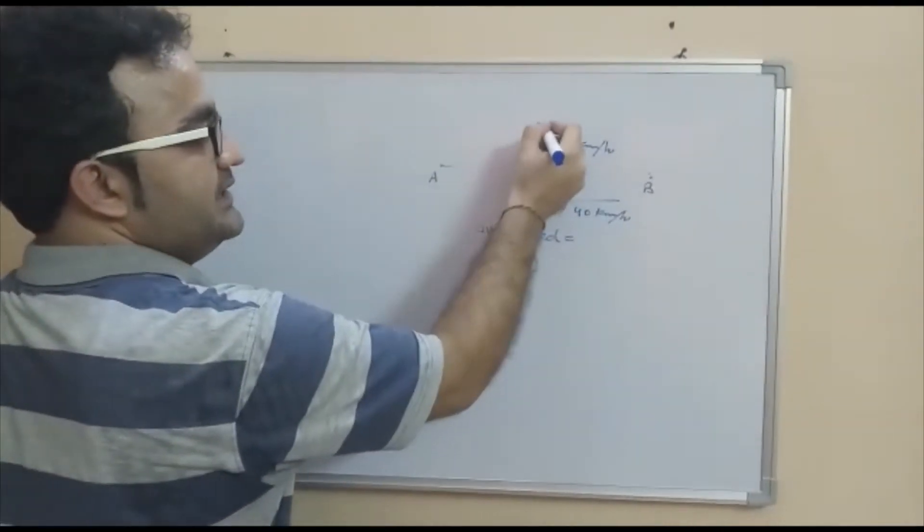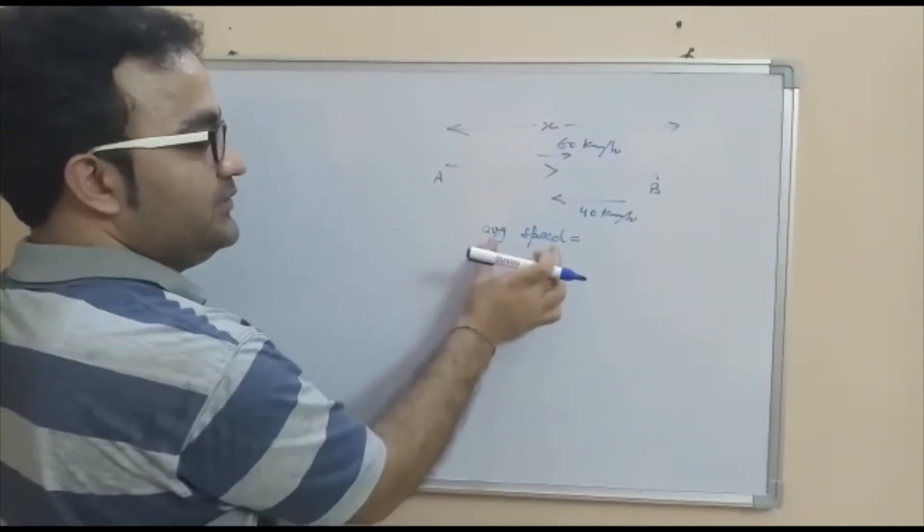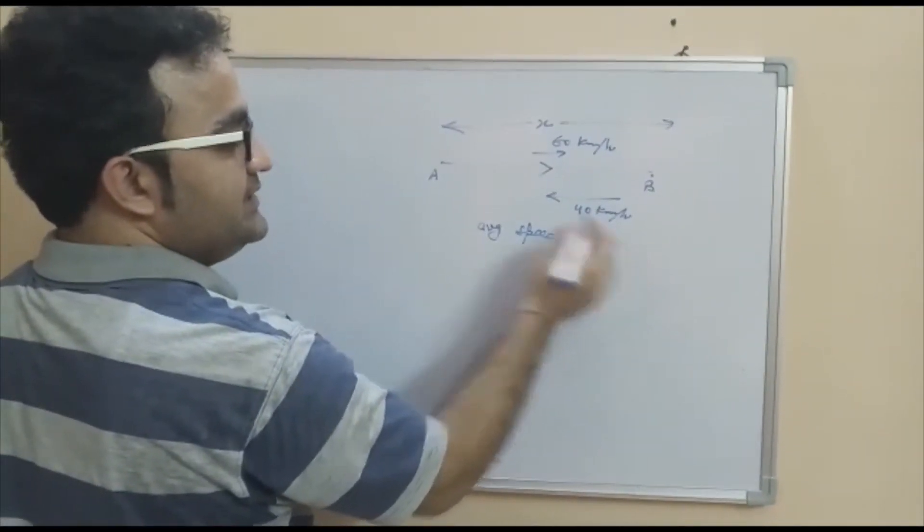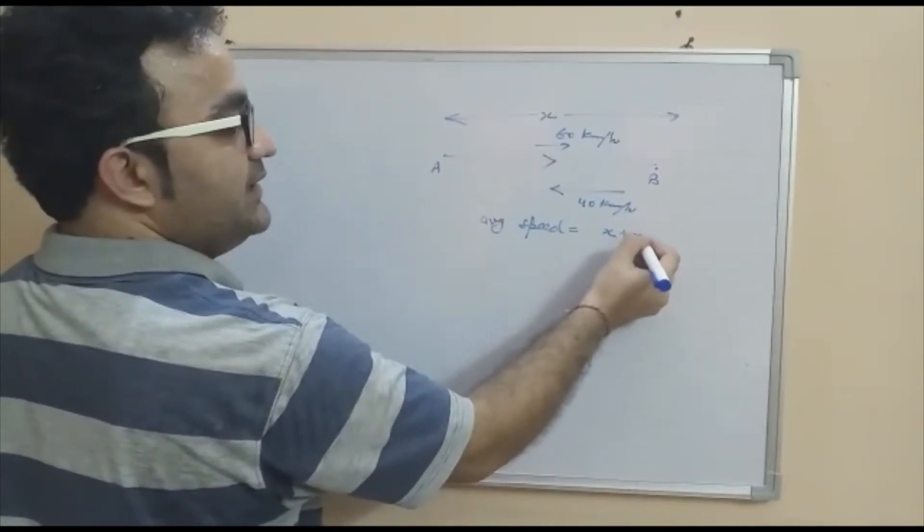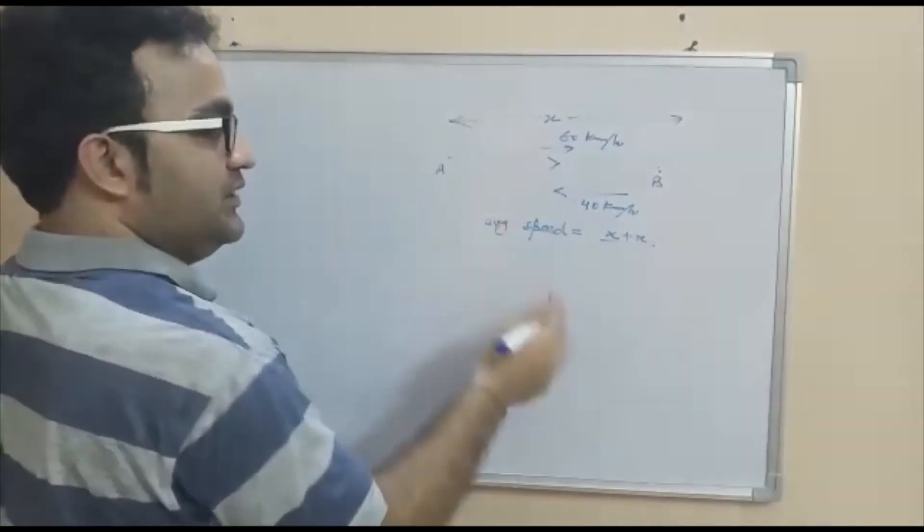Total distance, as the distance is not given, so we assume this as x. So average speed is the total distance upon total time. So total distance is A to B plus B to A. So x plus x upon the time. Now time is not given. We will find out how.